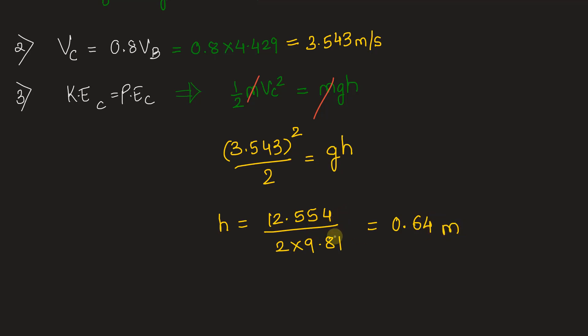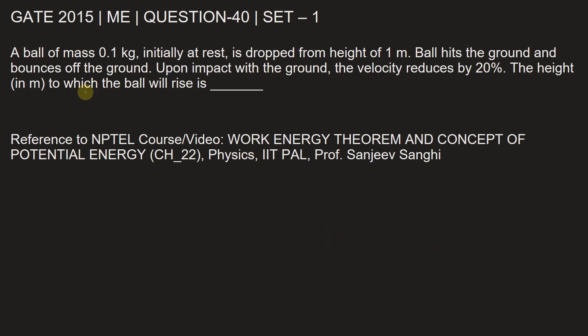So we can round off 0.6399 to 0.64 meters. We had velocity in meter per second and acceleration in meter per second square. So the height that we will get will be in meters. Let's fill in the answer. Height in meter to which the ball will rise is 0.64 meters.